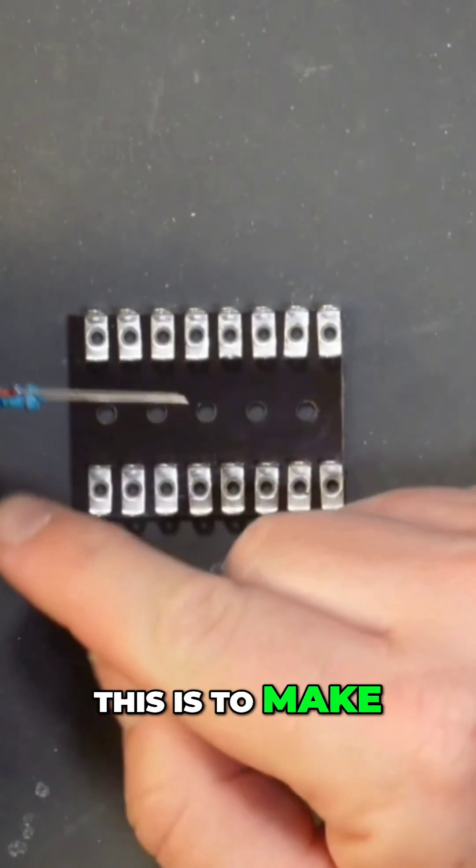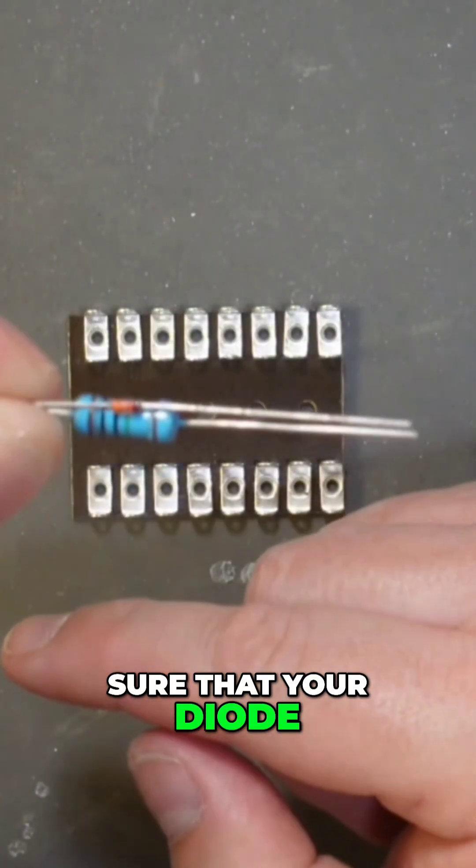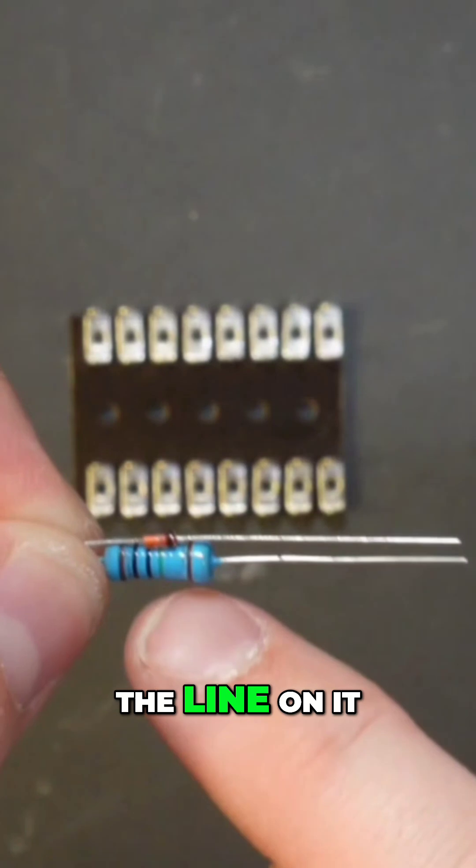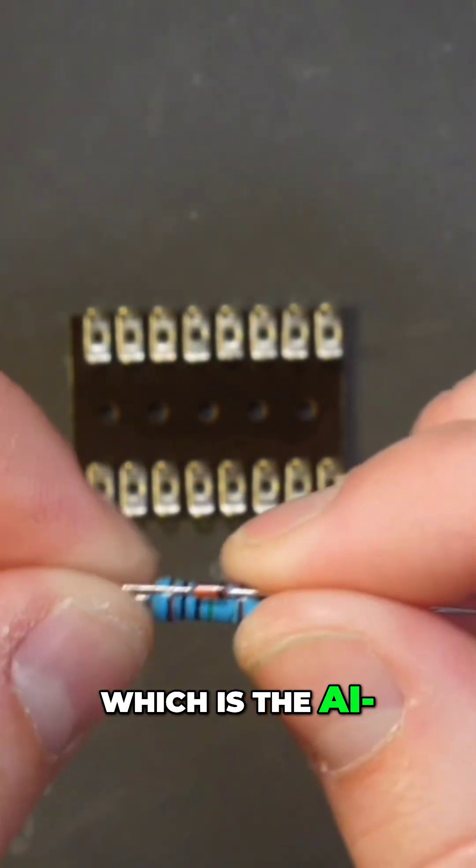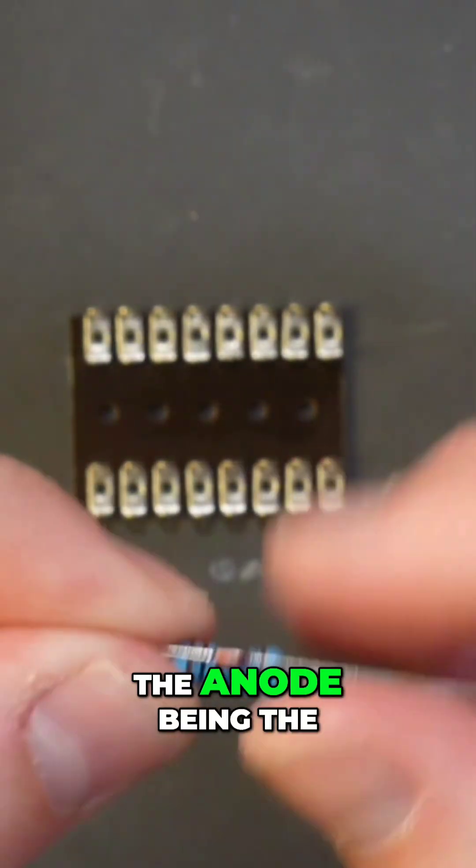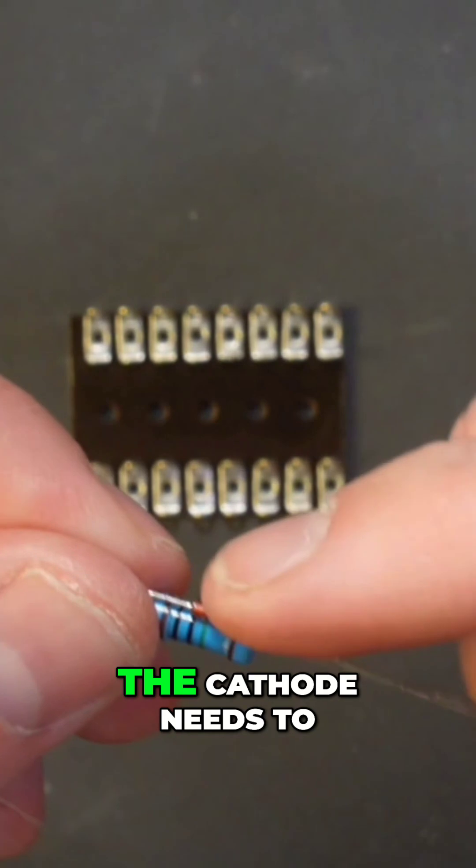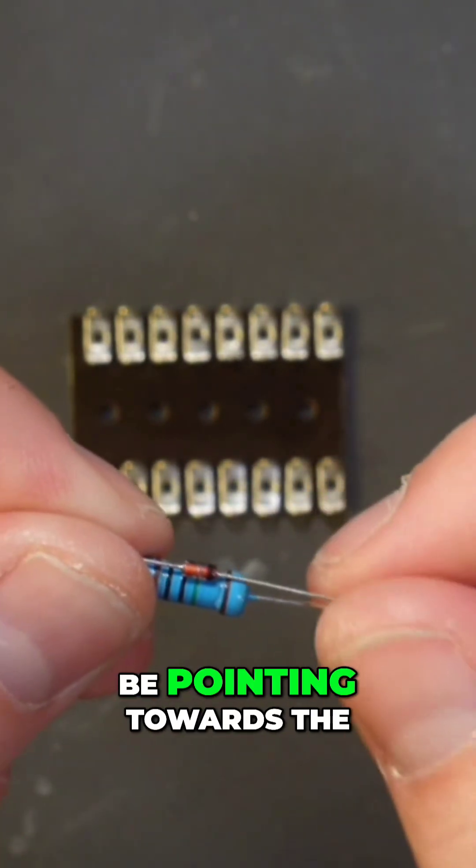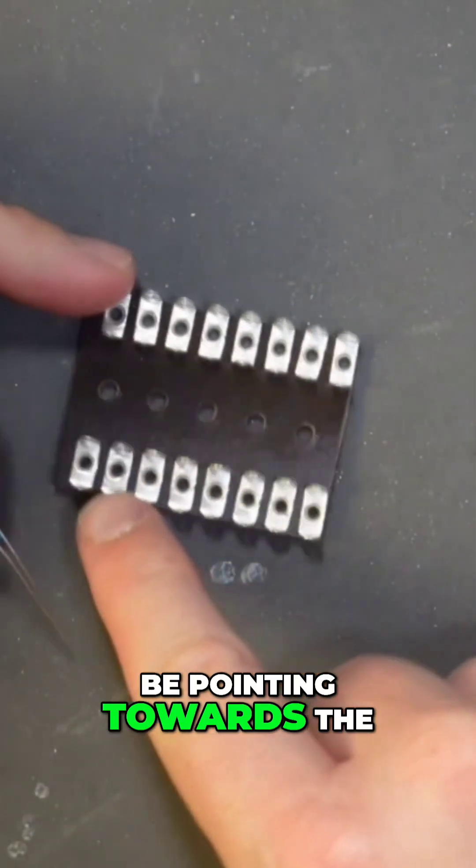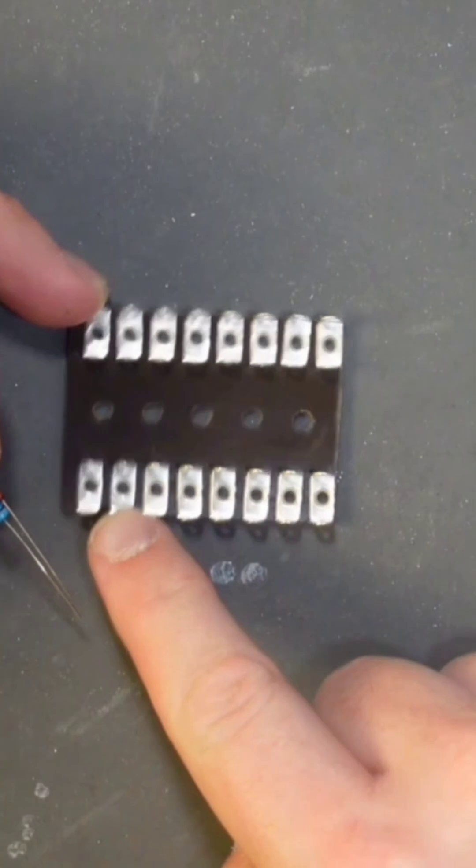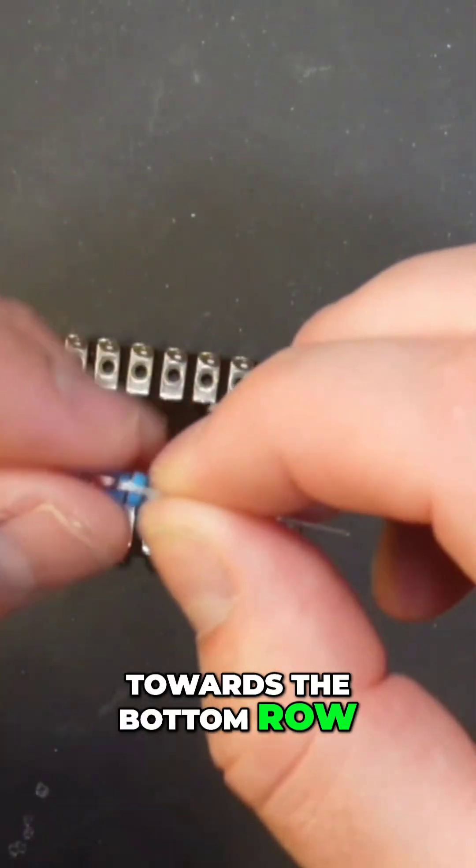The key part is to make sure that your diode—the line on it, which is the cathode—needs to be pointing towards the bottom row. The anode is the positive side. If the cathode isn't pointing towards the bottom row, it's not right.